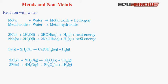Aluminium and iron react only with steam and no heat energy is released. The reactions are: Al + H₂O → Al₂O₃ + H₂ gas; and Fe + H₂O → Fe₃O₄ (ferric oxide) + H₂ gas.